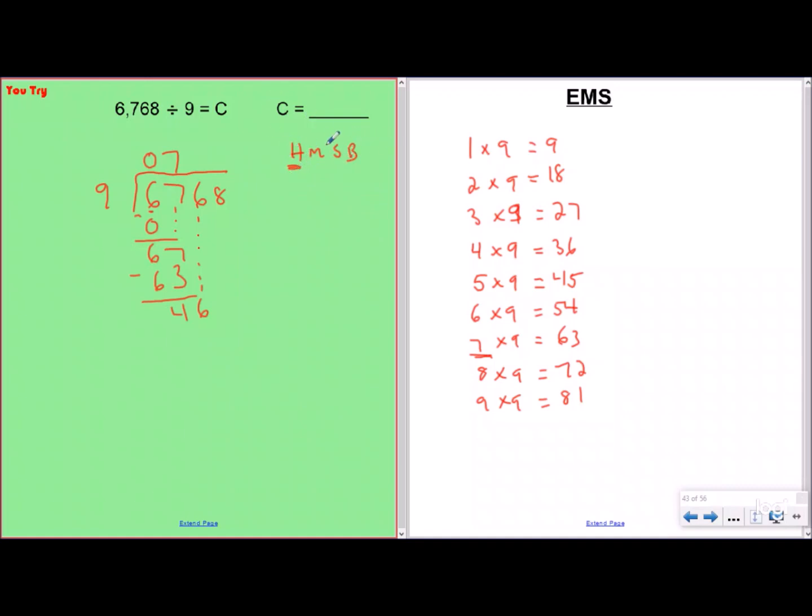So how many groups of nine fit into 46? Well, I can fit five in because that's 45, and so I'm going to put my five in my tens place. I'm going to multiply that. Nine times five is 45. I subtract, that's one. I bring down my eight, which I have left, which makes 18. Now, how many groups of nine go into 18? Obviously that one's pretty easy. Nine times two, when I multiply, that's 18. I subtract, that's zero. I have nothing left to bring down, and so I'm done because I have a digit over each digit in the dividend.